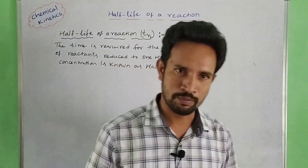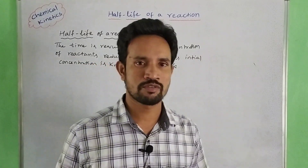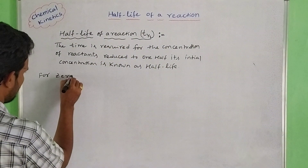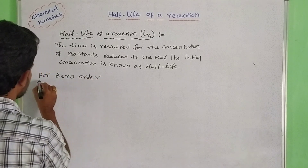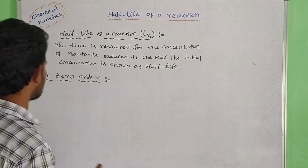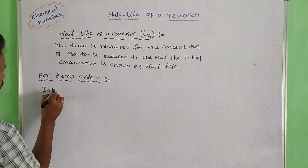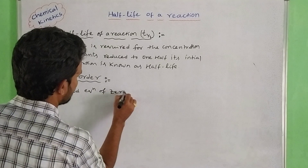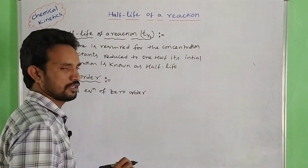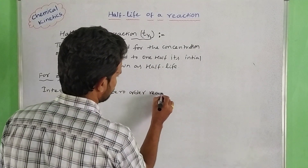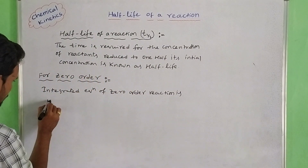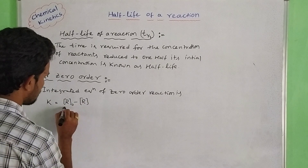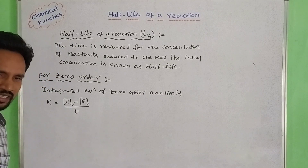We have already discussed integrated equations in our channel, so we can use integrated equations to derive half-life formulas. For zero-order reaction, the integrated equation is: K equal to concentration of R₀ minus concentration of R at time T.